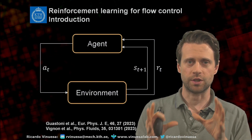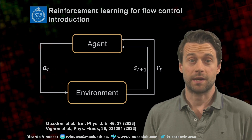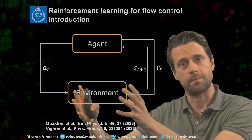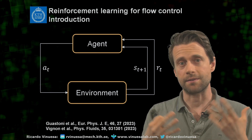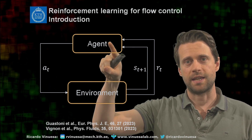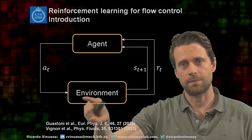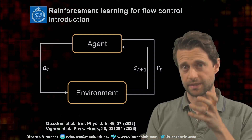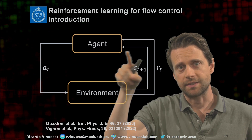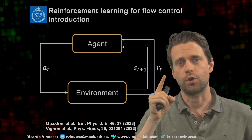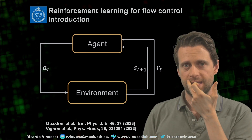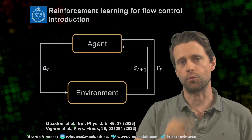Let me start with a very short introduction to reinforcement learning. You basically have a setup where an agent — in our case the neural network — is interacting with an environment. The environment in our example will be a CFD setup, a numerical simulation of a particular flow that we want to control. The agent applies actions to the environment, those actions change the state of the environment, and at the same time the environment provides what is called a reward — a measure of the quality of those actions. In our case, if we want to reduce drag, then the drag reduction will be the reward that the agent gets.